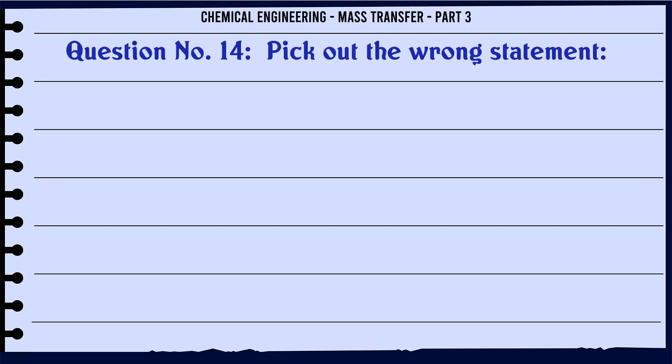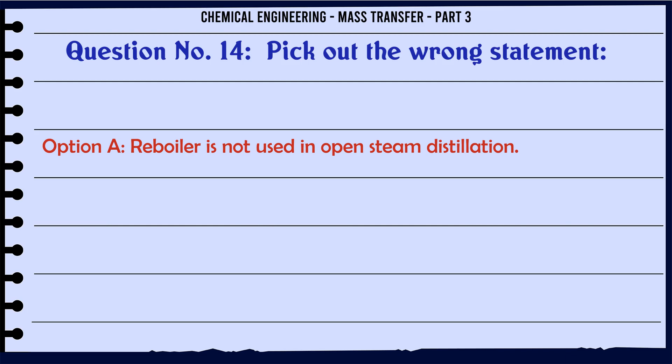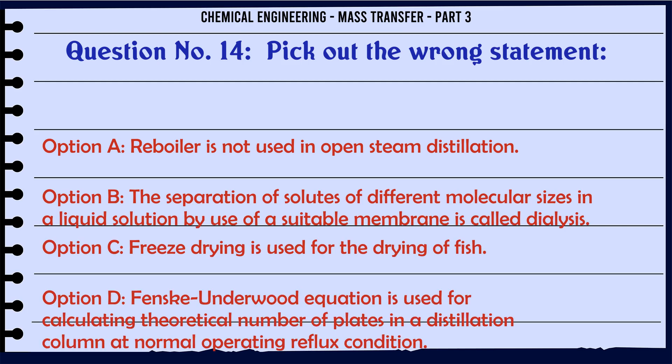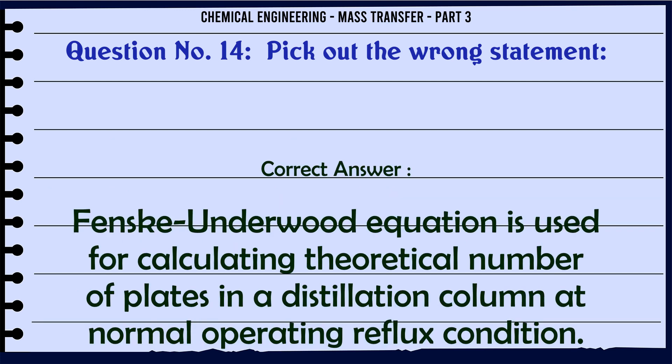Pick out the wrong statement. A) a reboiler is not used in open steam distillation. B) the separation of solutes of different molecular sizes in a liquid solution by use of a suitable membrane is called dialysis. C) freeze drying is used for the drying of fish. D) Fenske-Underwood equation is used for calculating theoretical number of plates in a distillation column at normal operating reflux condition. The correct answer is: D — Fenske-Underwood equation is used at minimum reflux, not normal operating reflux.